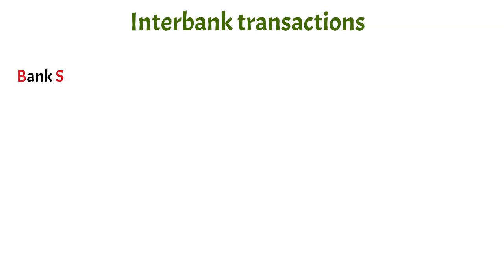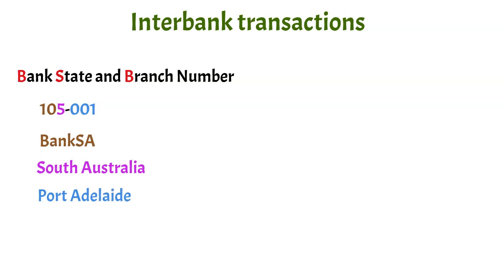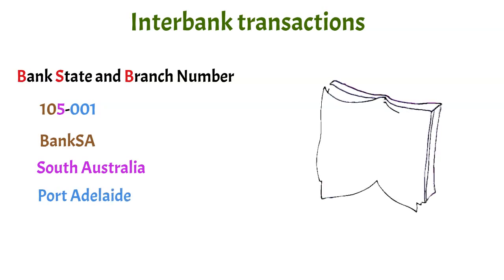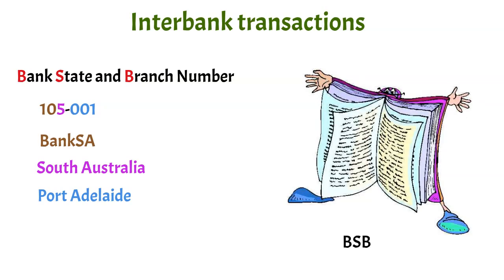At the heart of interbank transfers is the BSB, which identifies the bank, state and branch the account is held with. While the major banks have a BSB for each of their branches, some smaller players and former building societies have registered just one BSB for their entire bank. Back in the day, every bank branch in the country had a BSB book to look up the appropriate code when performing an interbank funds transfer.